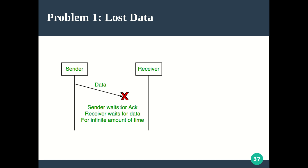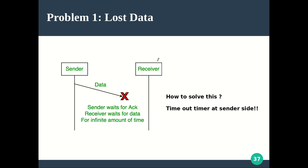Once the receiver receives data, only then can it send the acknowledgement back. Now the sender waits for an acknowledgement and the receiver waits for data — both will wait infinitely. The receiver thinks the sender didn't send anything, and the sender thinks the receiver is taking more time to process. We need to force the sender to stop waiting after some time, since if the receiver is there it should reply by a certain point.